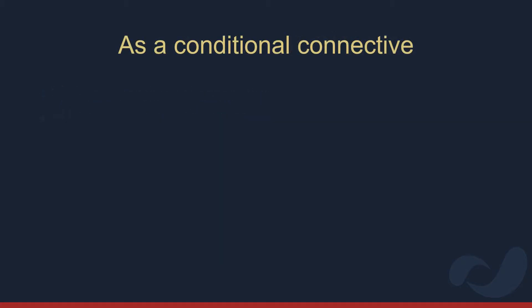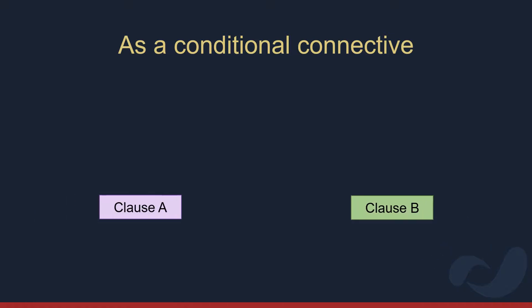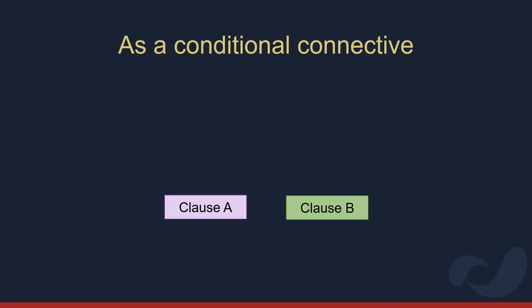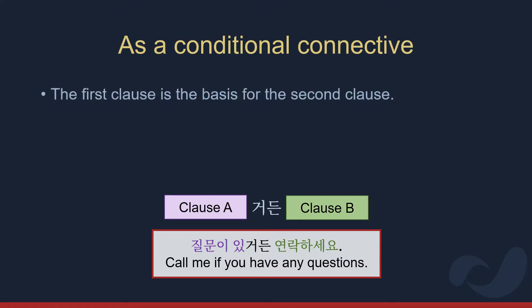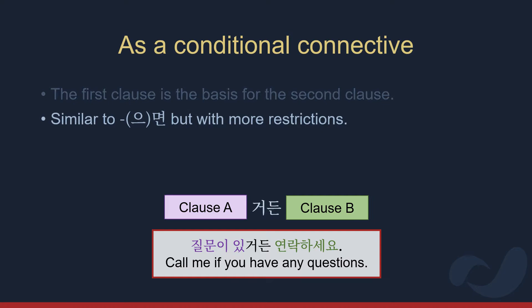Very briefly, the conditional connective 거든 is similar to the connective 면, where the first clause is the basis for the contents of the second clause. The difference between the two is explained in UKR008. That's all we'll say because sentence final 거든 is very different.